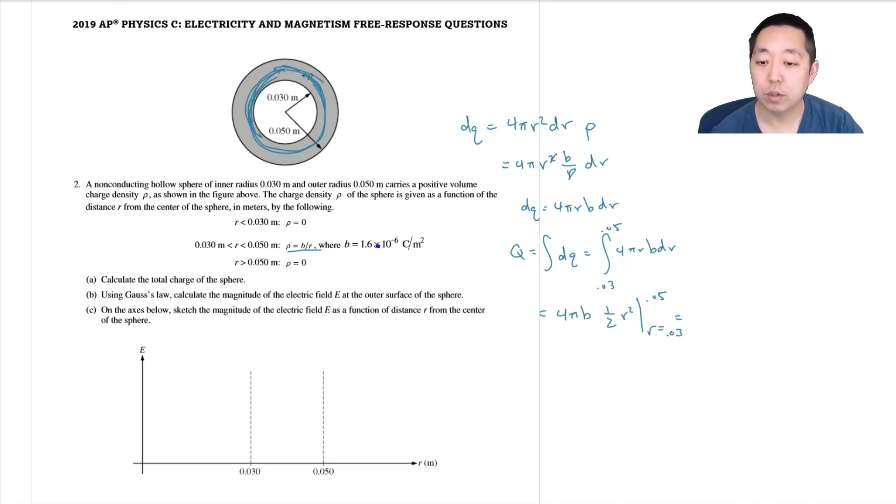And did they tell us what b was? Oh, yeah, they give us a number here. So it's 4 pi times 1.6 times 10 to the minus 6 times 1 half times 0.05 squared minus 0.03 squared. Oh, sorry, I'm cutting off the screen here. Times 1 half times 0.05 squared minus 0.03 squared. So 4 pi times 1.6 e minus 6 times 0.05 times... I got 1.61 times 10 to the minus 8. And the units of this are coulombs. Coulombs from coulombs per meter squared. And I believe that is what I got.